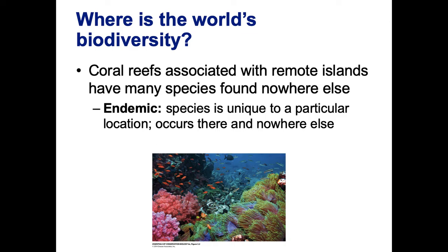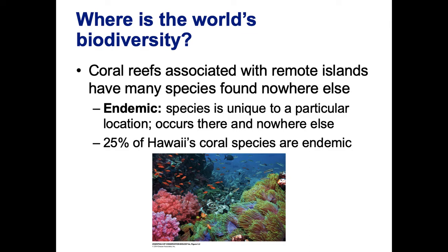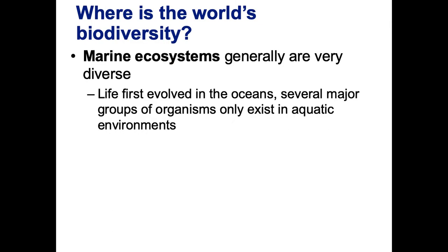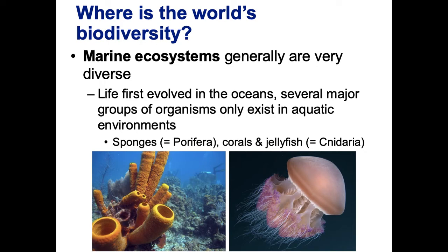For example, a species in a cave in Arkansas found nowhere else is endemic to that cave. About 25% of Hawaii's coral species are endemic, so there's a tremendous number of endemic species there. Marine ecosystems generally are also very diverse, thought to be because life first evolved in the oceans and there have been fewer large-scale disturbances, allowing a lot of time for evolution. Marine organisms that are particularly diverse include sponges, corals, and jellyfish.